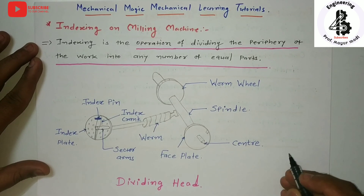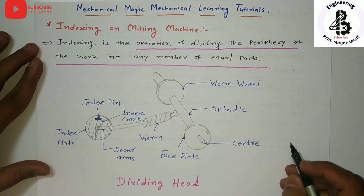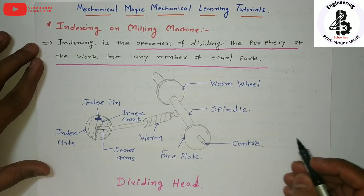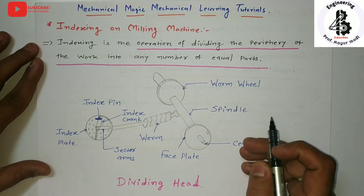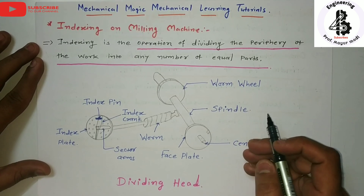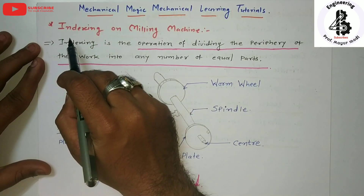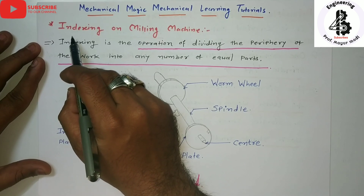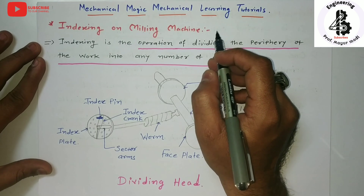Welcome to my YouTube channel, Mechanical Magic Mechanical Learning Tutorials. Today in this video I am talking about some of the important machining elements which can be used in milling machines for manufacturing of a gear. The important topic for the manufacturing process, or production technology, is the indexing mechanism on milling machines.